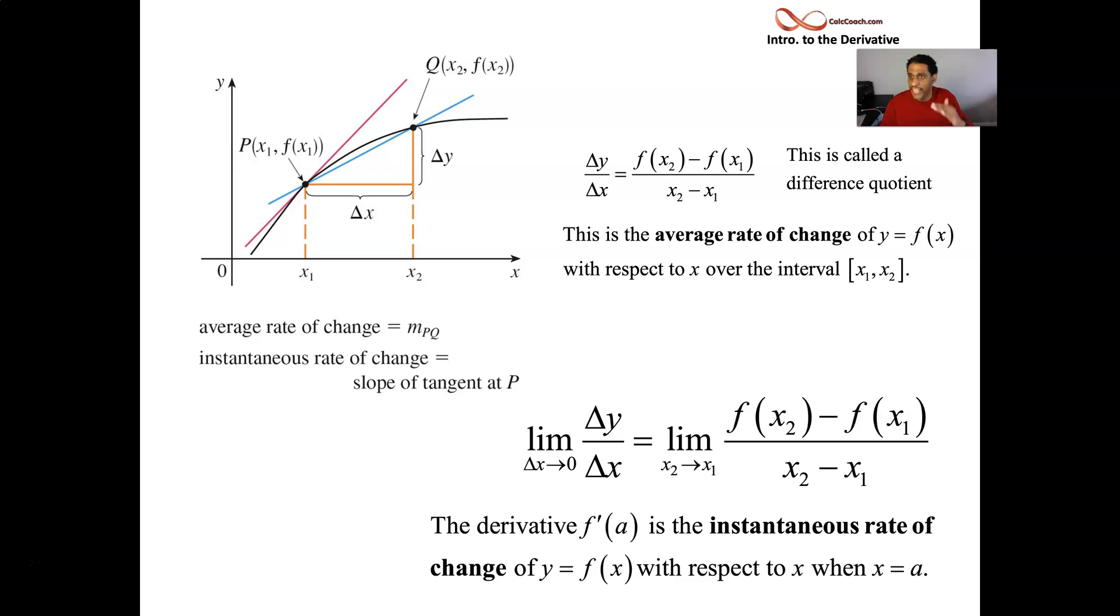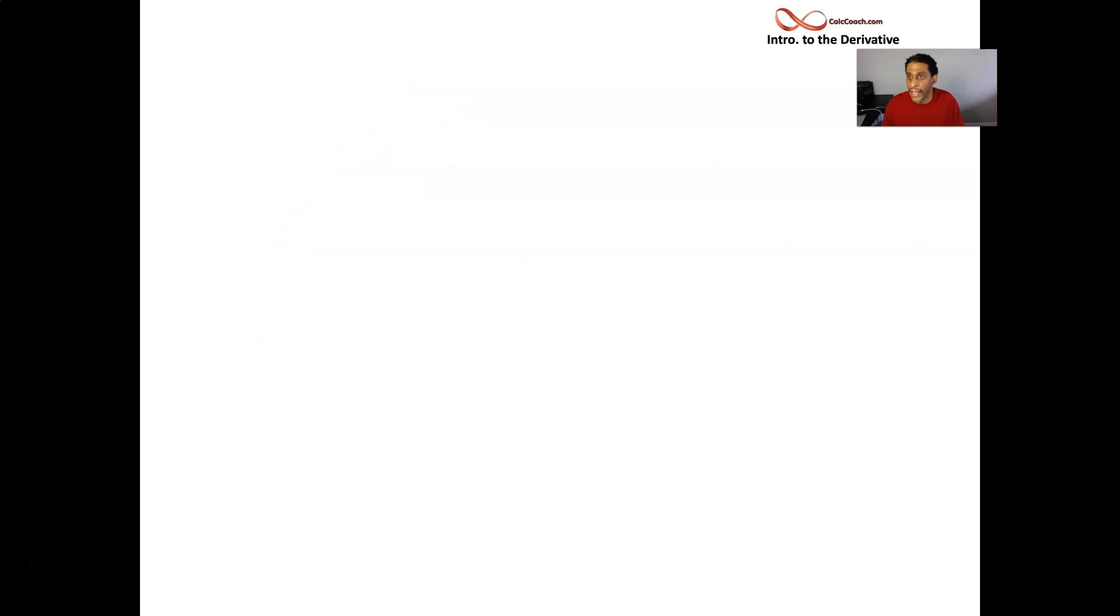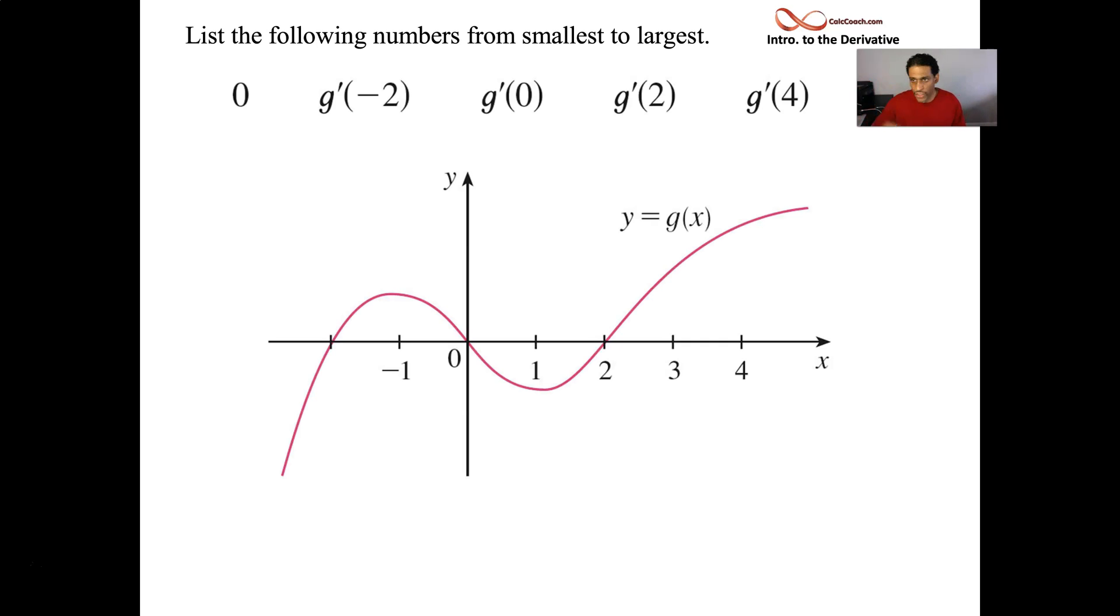All right, great. So the steeper the tangent line slope, the steeper the function, the more steep the function is, and we can then use that and be able to talk about comparing the steepness of the function at different points.